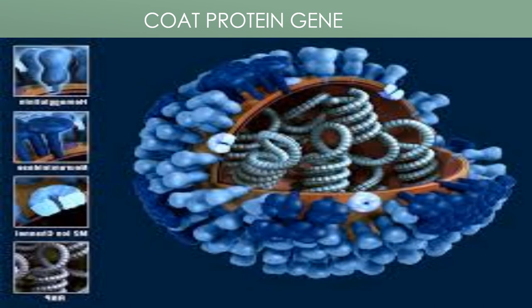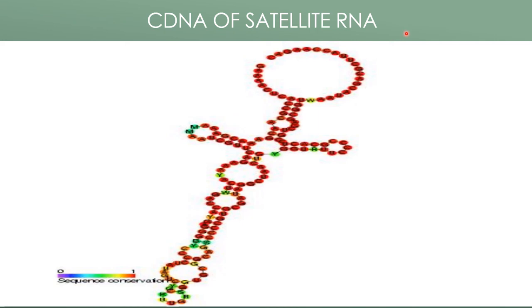cDNA of satellite RNA: some RNA viruses have a small RNA molecule called a satellite, which depends on the viral genome for replication but is not necessary for viral function. Satellites can either decrease or increase the severity of disease produced by the virus carrying them. cDNA copies of satellites that reduce disease severity have been integrated into the host genome.